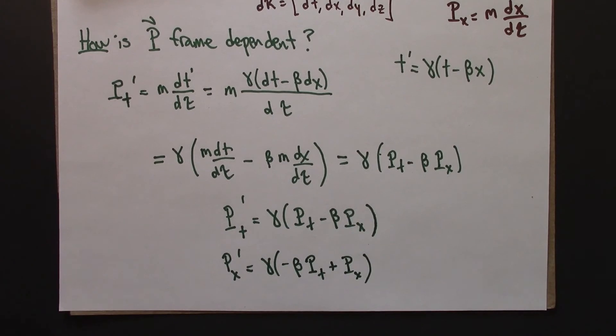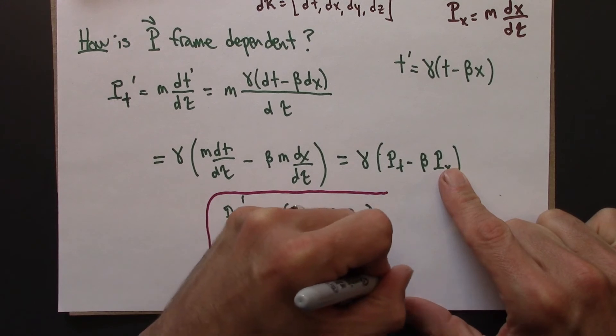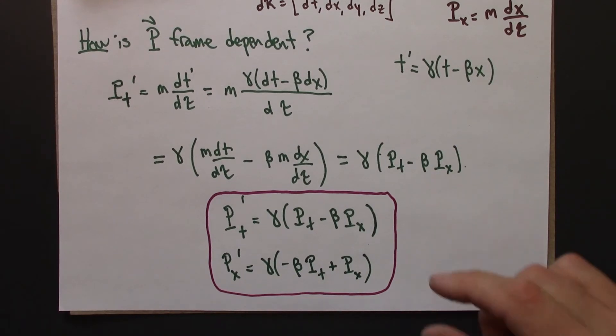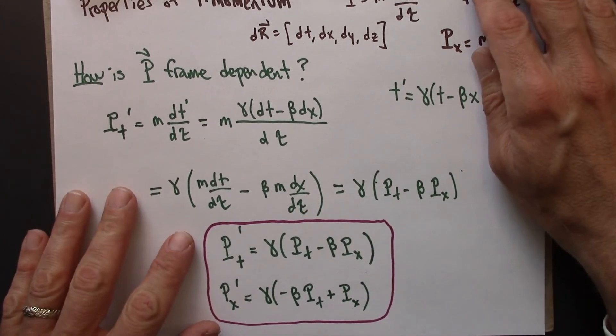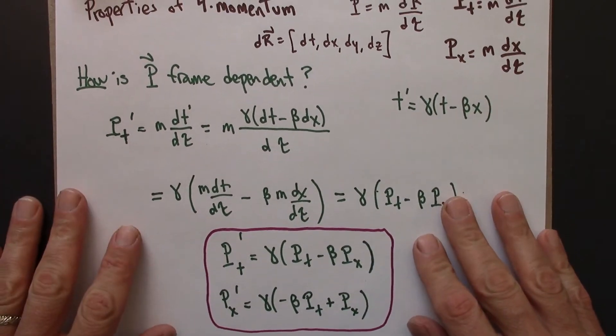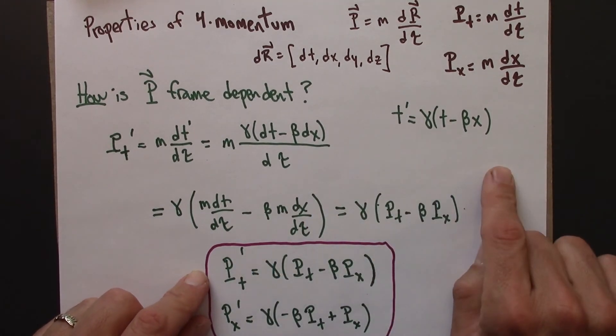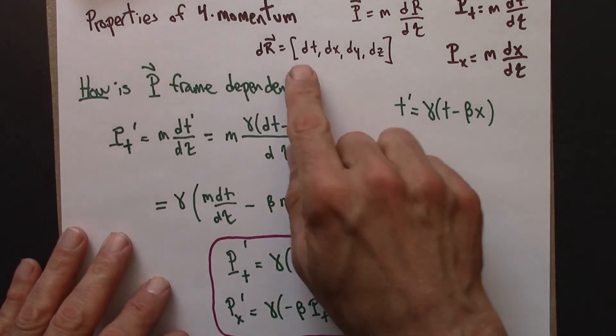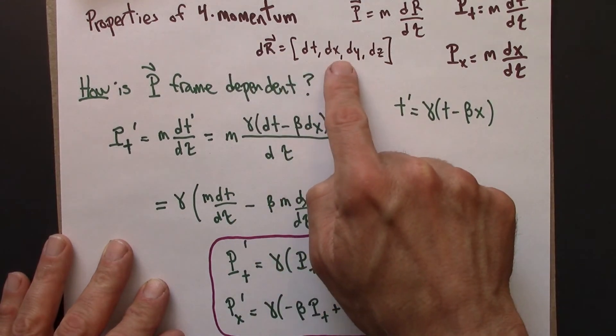So these equations, I hope, look familiar. They're just the Lorentz equations, the Lorentz transformations. But instead of x and t, I have Px and Pt. So what this shows me is that the four momentum transforms from one reference frame to another, just like x and t transform from one reference frame to another.